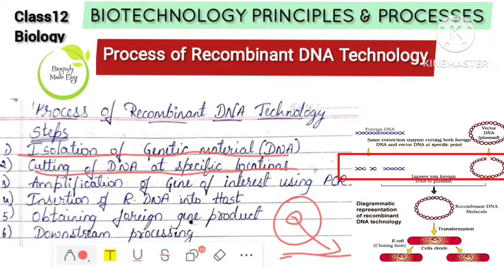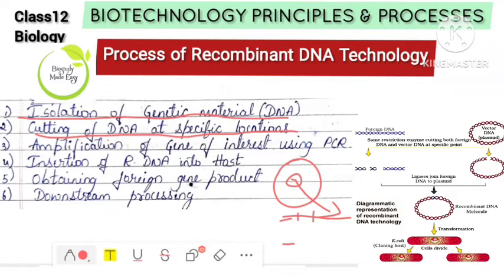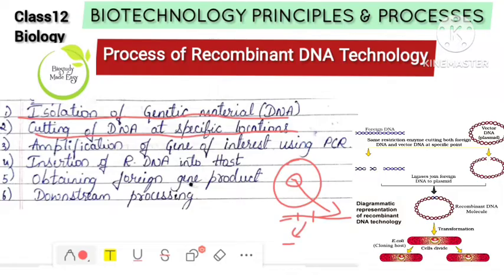Cutting the DNA at specific locations — we will cut the DNA fragments. We will make the same Xerox copies by amplification of the gene of interest using PCR. So PCR is a technique used to produce a large number of DNA fragments from one DNA fragment.